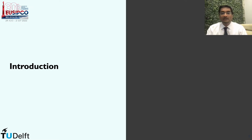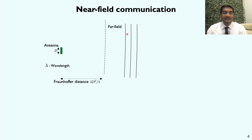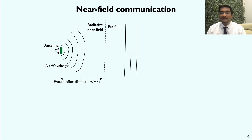Traditionally wireless systems have been extensively studied and designed in the so-called far field propagation regime. This regime comprises all coordinates that are away from the radiating antenna by at least the Fraunhofer distance, which is 2D² over λ, where D denotes the length of the antenna array and λ denotes the wavelength. As we head towards higher carrier frequencies such as millimeter wave and terahertz systems where wavelengths get smaller, the Fraunhofer distance increases for a given aperture and we quickly get into the radiative near field region. Unlike the far field regime where wavefronts are planar, wavefronts in the near field region are spherical, requiring us to rethink MIMO system design all the way from hardware implementation to algorithms and waveforms.